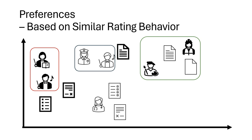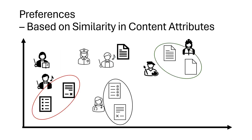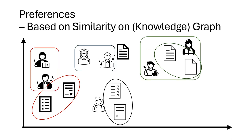The embedding vectors are usually identified or learned from similar user rating behavior, or they are learned based on similarity in content attributes, and recently also based on similarity on graphs or knowledge graphs.